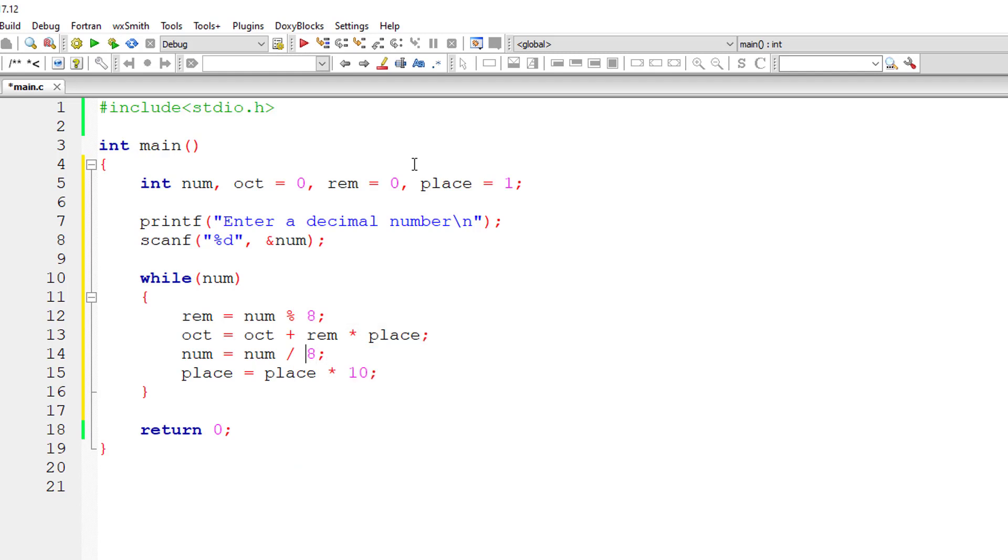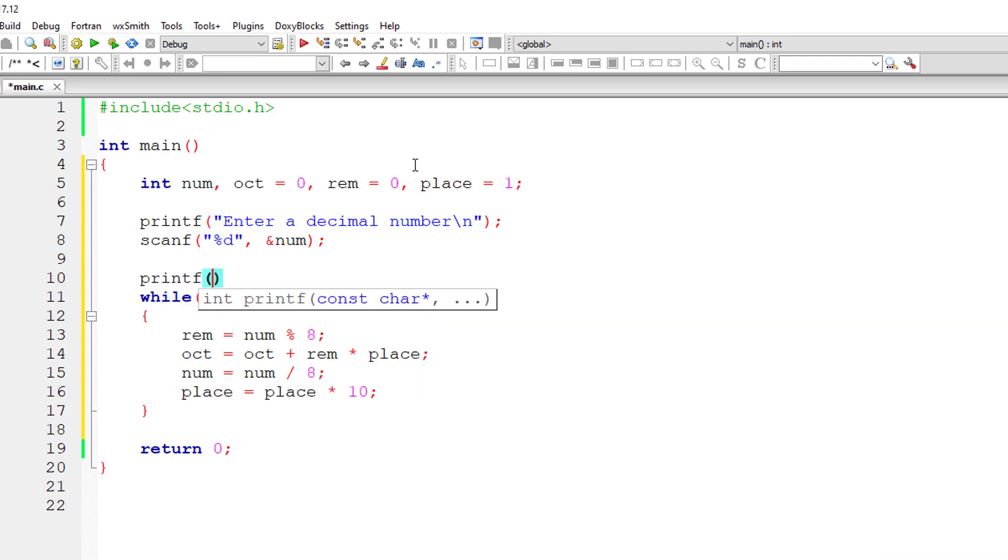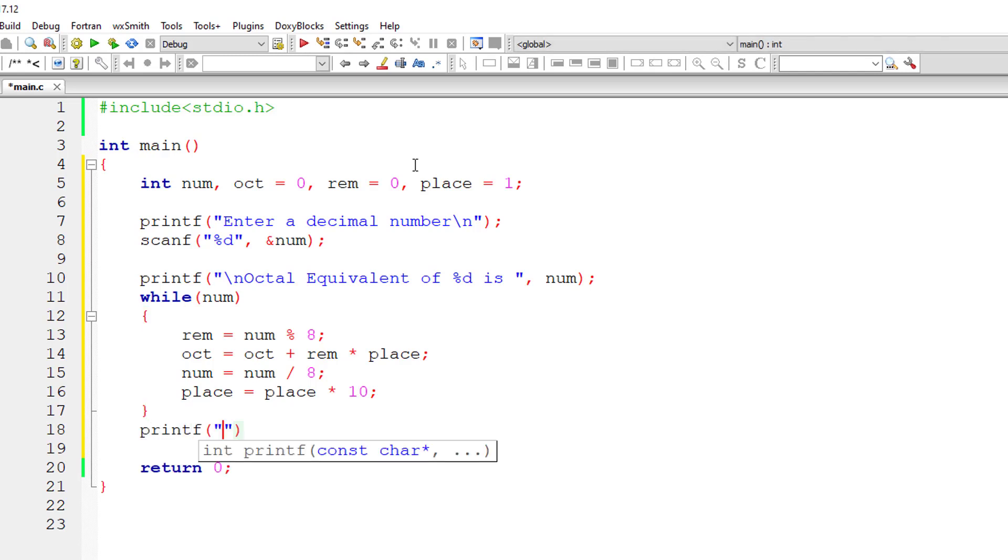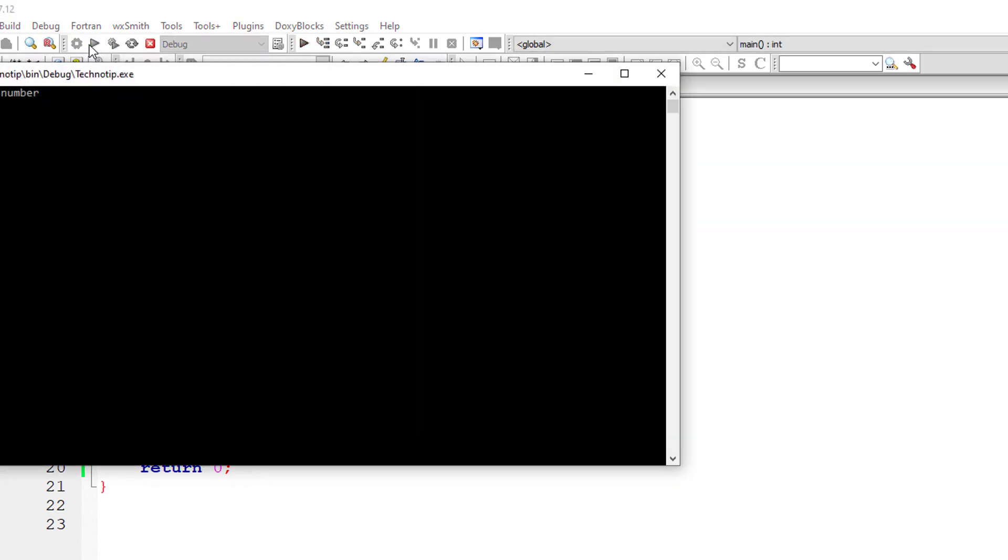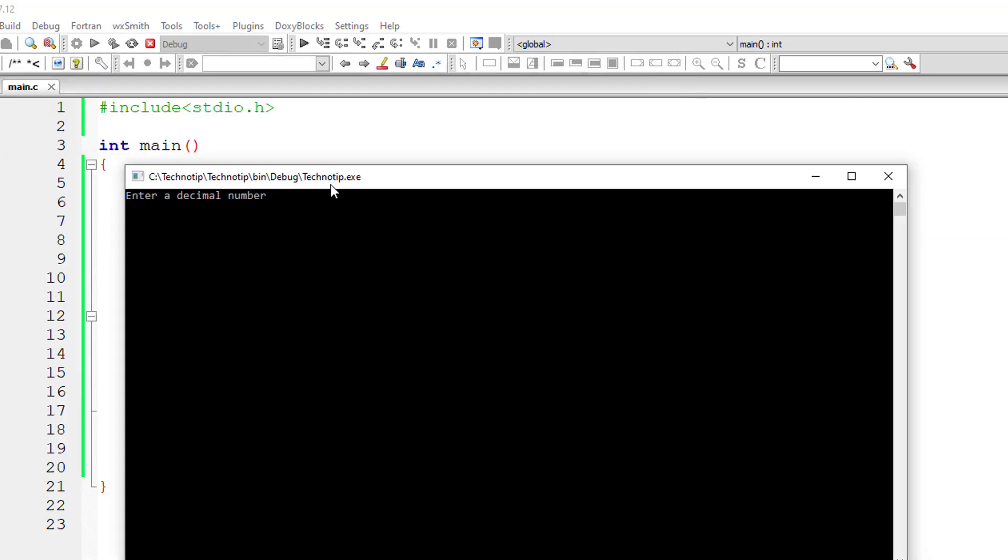Now I'll output a nice message to the user that octal equivalent of %d, that is present inside variable num, is, I'll output the result after this while loop, %d backslash n newline character, comma, the result is present in variable octal. So that's it. Let me compile and execute the program. So decimal 16, octal equivalent of decimal 16 is 20.